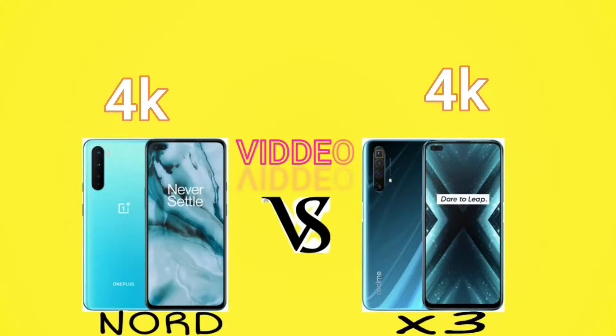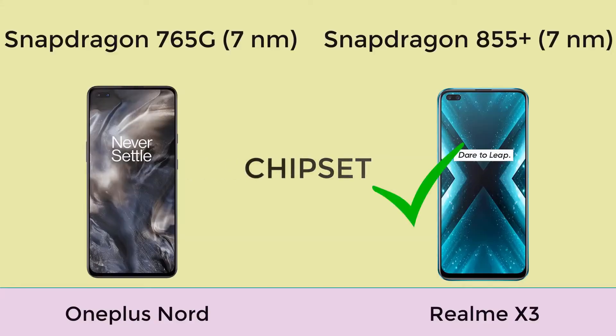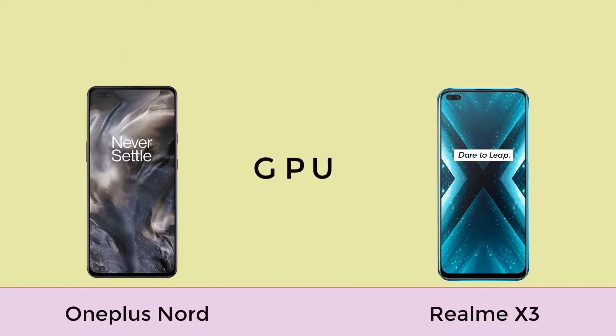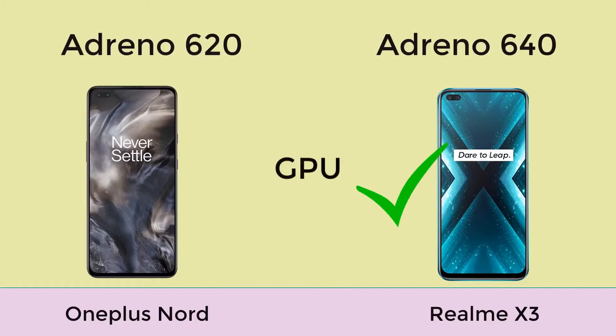For the chipset, OnePlus Nord has the Snapdragon 765 chipset and Realme X3 has the Snapdragon 855 Plus chipset, so the winner is Realme X3. For the GPU, OnePlus Nord has the Adreno 620 and Realme X3 has the Adreno 640, so the winner is Realme X3.